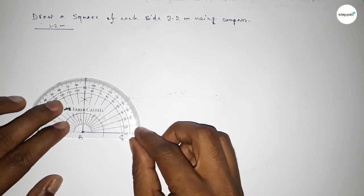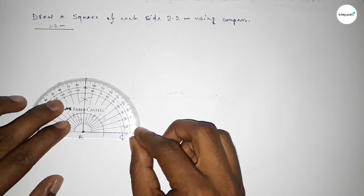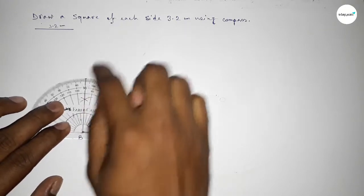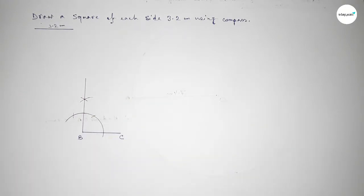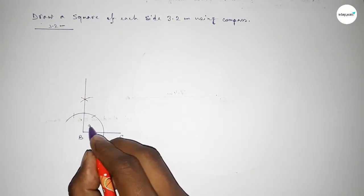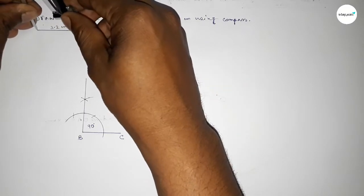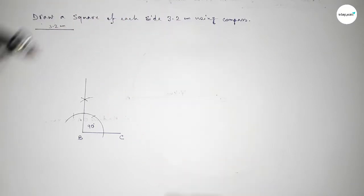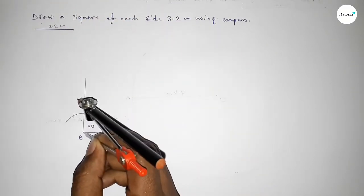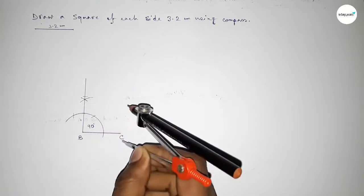Now joining this line to get a 90 degree angle. Checking — this is perfectly a 90 degree angle. Now taking the length 3.2 centimeter by using the compass and putting the compass on point B, cutting here.